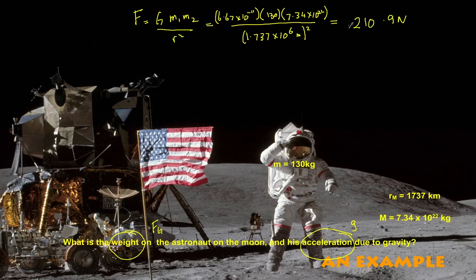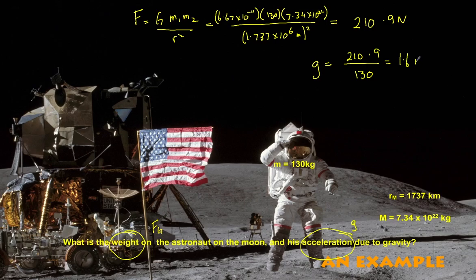To be clear, this is the same force that the astronaut applies onto the moon — it's a force due to Newton's third law. So what is the gravitational field strength, or the value for g? All we need is the force we just calculated and divide that by the mass of the astronaut — we're simply cancelling out that 130 — and we get a value of 1.6 meters per second squared. That is the gravitational field strength, and that is the acceleration due to gravity on the moon: 1.6 meters per second squared.